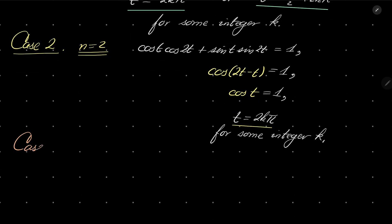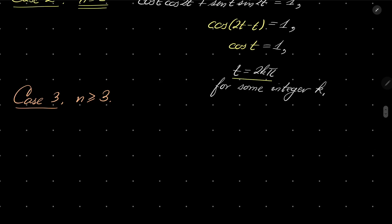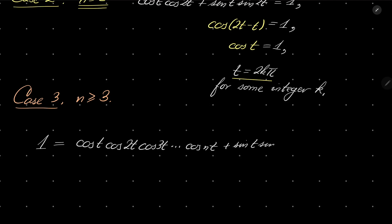Now the general case when n is greater than or equal to 3 — that's the interesting case. We have the following expression: the product of cosines cosine t, cosine 2t, and so on up to cosine nt, plus the product of sines. I can do the following estimation.